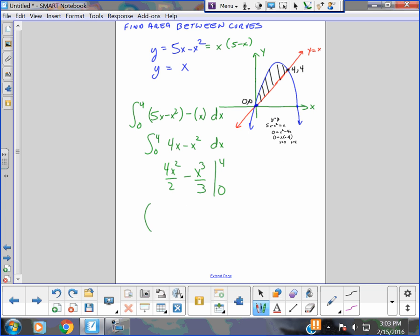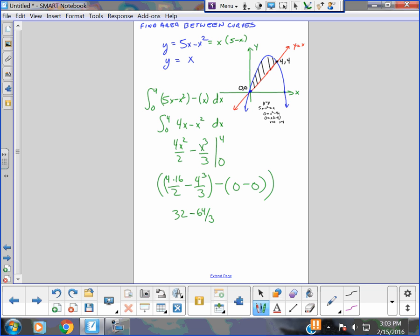Now I can do the integration. 4 times 16 over 2, minus 4 cubed, which is 64. Again, I plug in the zeros. I know that these are both zeros. I've got some math to do. This might be one where I just grab my calculator. But I get 32 minus 64 thirds. And I take my calculator. It's 96 thirds minus 64 thirds. It's 32 thirds.